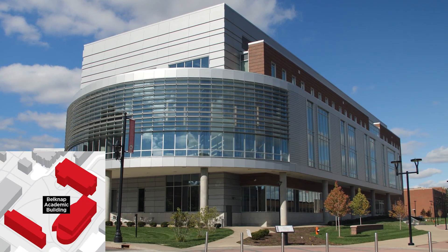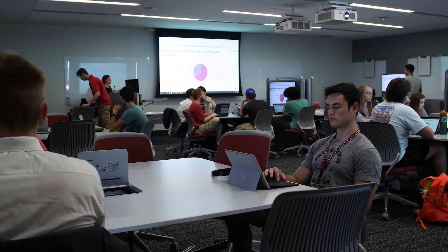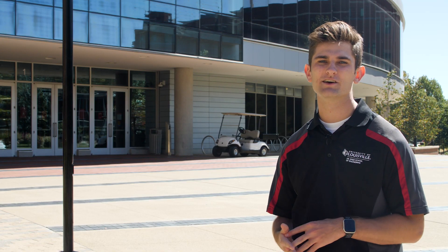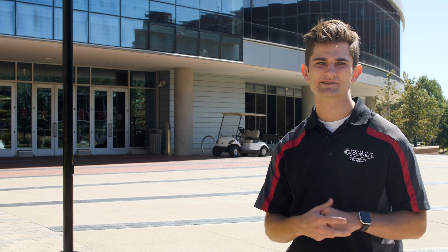This is the Belknap Academic Building, also known as BAB. This is our newest building here on campus. We also have our Engineering 110 course in this building, which is the first semester course that all of our freshmen go through. The idea behind this course is to give students an idea of what types of careers they can pursue based on the discipline they're in.